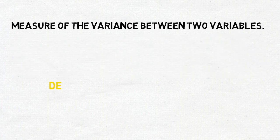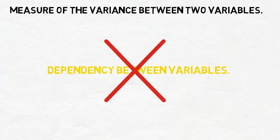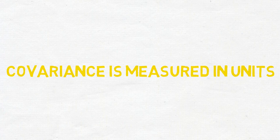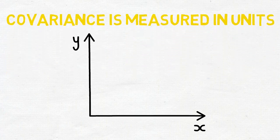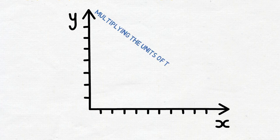However, the metric does not assess the dependency between variables. Unlike the correlation coefficient, the covariance is measured in units. The units are computed by multiplying the units of the two variables.